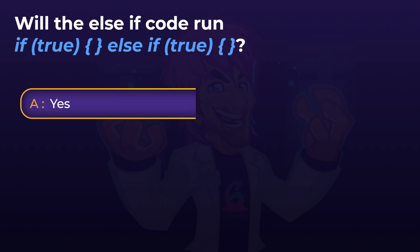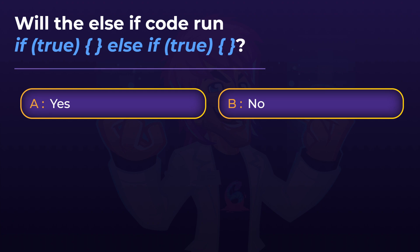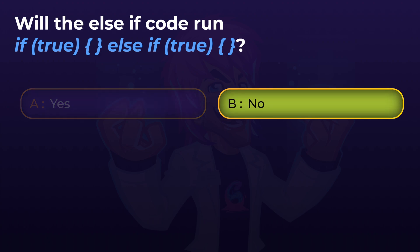Will the else-if code run here? We have if true, curly braces, else-if true, curly braces. Will the code run that is inside of the else-if curly braces? The answer is no. If an if statement evaluates to true above an else-if statement, the else-if statement is never executed — the check is never even run. The point of ifs and else-ifs is to check one by one until the first valid true evaluation happens, and then discard all of the other else-if checks. So because the first if check is true, the code inside the curly braces would run and the else-if would never get a chance to run.